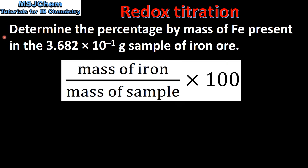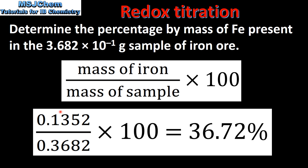In the final step we will determine the percentage by mass of iron present in the sample of iron ore. To do this we divide the mass of iron by the mass of the sample and multiply by 100. This gives us a percentage by mass of iron of 36.72%.